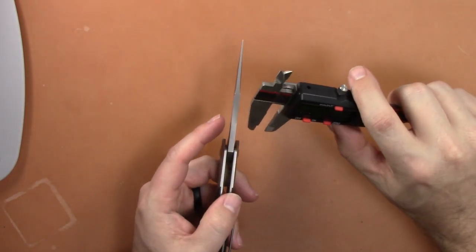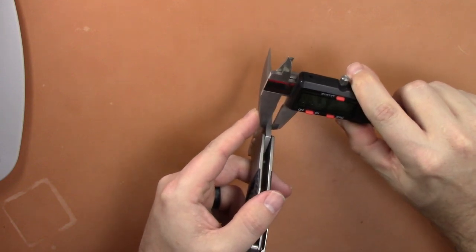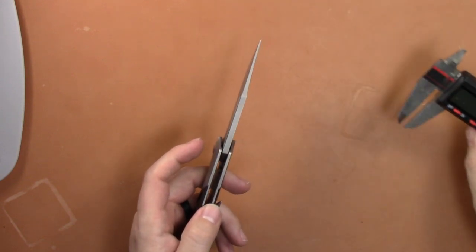Your blade stock is pretty thick, actually. I want to say it's, yeah, it's over 1 inch, 0.15 inches thick on the blade stock.